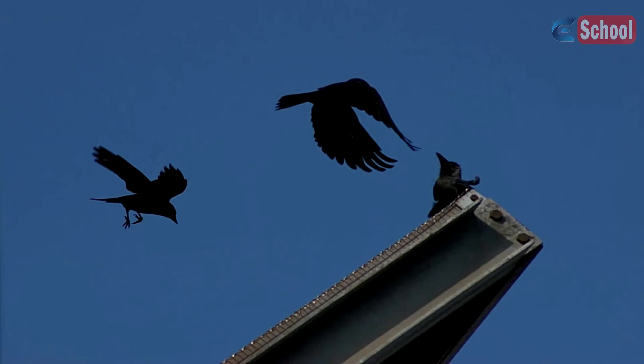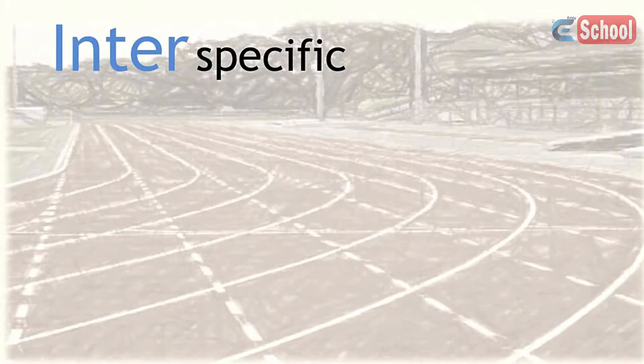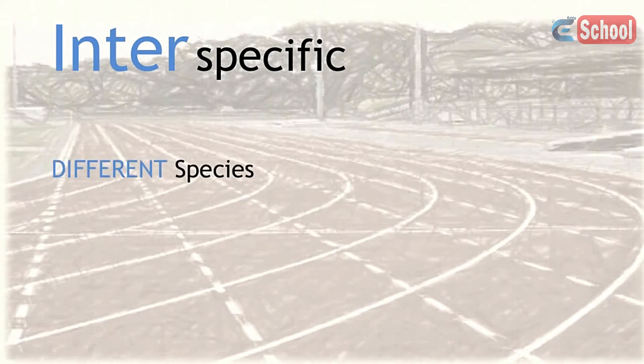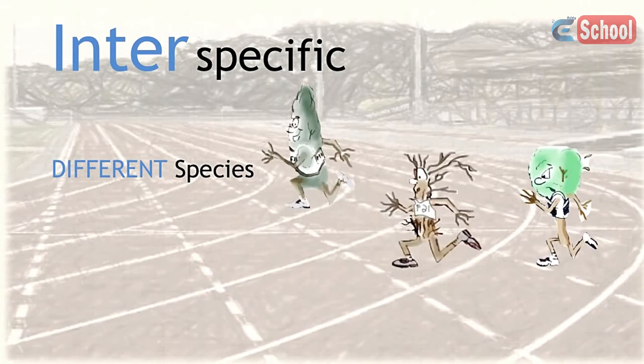On the other hand, interspecific interactions are the effects that individuals of different species have on one another. For example, interspecific competition may involve different species of plants and trees competing for light.